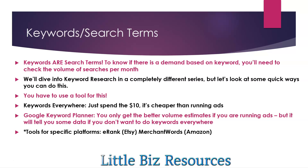You really do need to use a tool for this. Keywords Everywhere is the one I use most — I spend about $10 and it lasts the entire year for me. It's cheaper than running ads. You can use the Google Keyword Planner and it's free, but you only get broad volume estimates like '1,000 to 10,000' — so if there are 1,500 searches a month, they give you that wide range. Google Keyword Planner is not very useful if you're not running ads. Then there are tools for specific platforms: E-Rank for Etsy, Marmalade, and Merchant Words for Amazon.